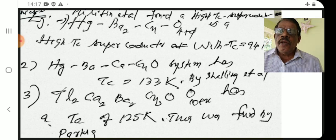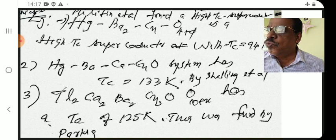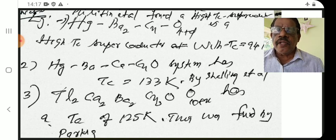What are high-temperature superconductors? Give a few examples — their critical temperatures are above 77K, the boiling point of liquid nitrogen.